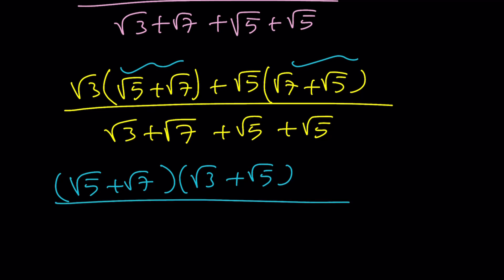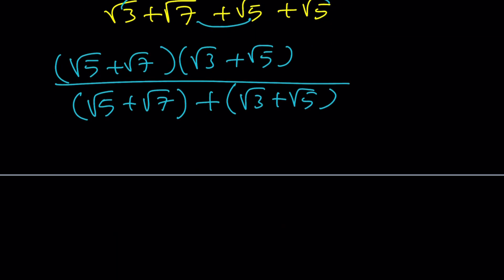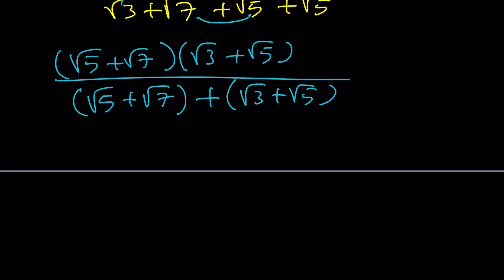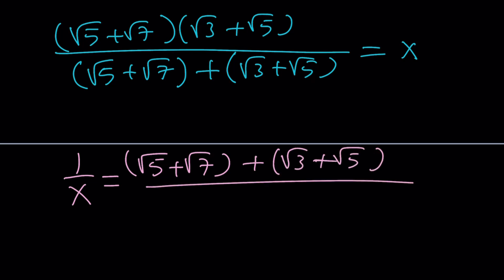Notice we get a common factor. Taking that out: root 5 plus root 7 multiplied by root 3 plus root 5. At the bottom I want to write the expression the same way, grouping root 3 plus root 5 as the outer terms. Notice that those two expressions appear in the numerator, which means we can use substitution. Let's call this x and look at 1 over x, because 1 over x is separable, while x is not. We are dividing a sum by a product, which is separable.